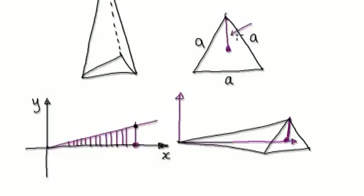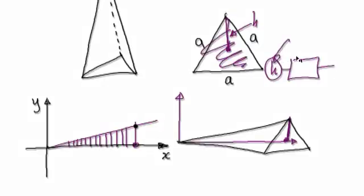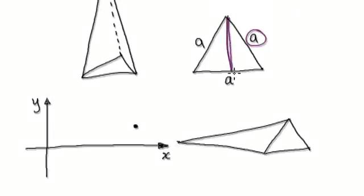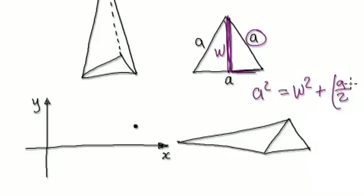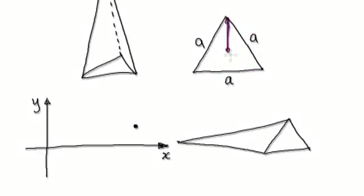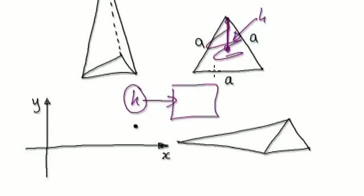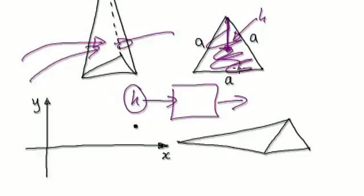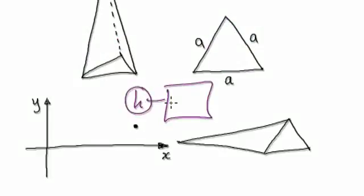Before we can do that, if I give you this length here — let's say this length is h — you have to be able to give me the area of this triangle when given h. So if I give you a, you can use Pythagoras to work out this length. It would be: a squared equals w squared plus (a over 2) squared, and then you can work out w, and once you've got w, divide by 2 to get h. But now I want you to come up with a formula: when I give you h, give me the area of this equilateral triangle.